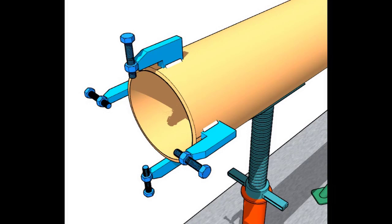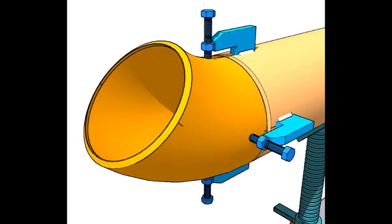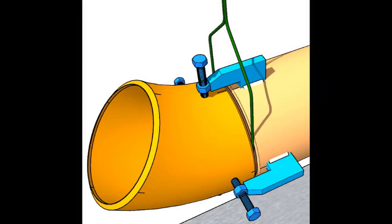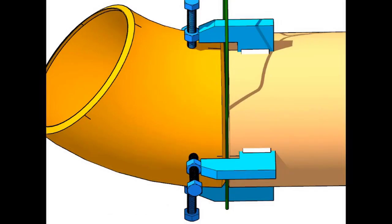Put the elbow in the clamps and lightly tighten. Put the gap rod in the joint. Match the center lines on both the pipe and the elbow.